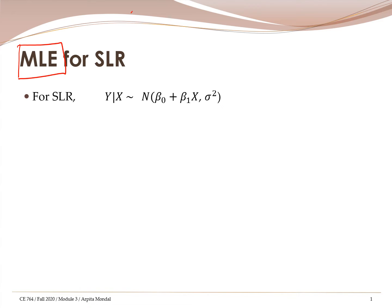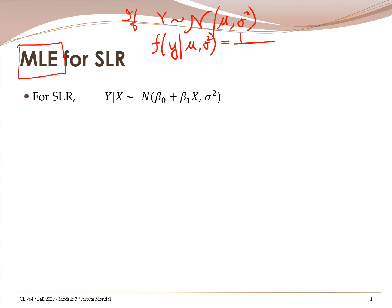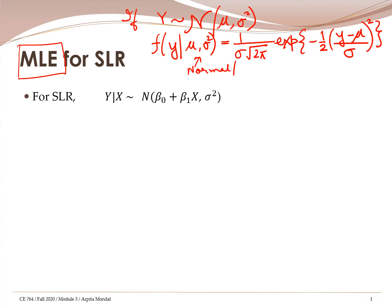Now recall, if you have a random variable y which belongs to the normal distribution with two parameters — we know that the normal distribution has two parameters mu and sigma square — then the probability density function f of y given the two parameters mu and sigma square is nothing but 1 upon sigma root 2 pi, exponential of minus half times (y minus mu) by sigma, whole square. This is the expression for the Gaussian probability density function.